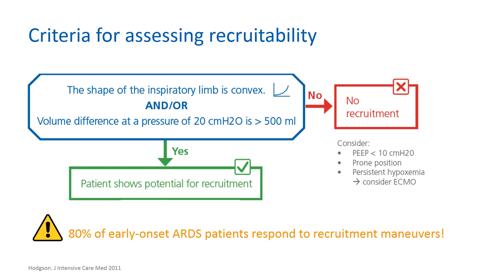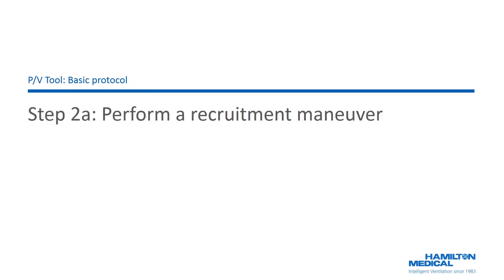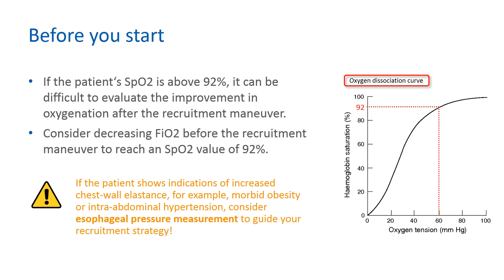After confirming the patient has high lung recruitment potential, it is time to perform an alveolar recruitment maneuver. Before you start, evaluate the patient's oxygenation status. If the patient's SpO2 is above 92%, it can be difficult to evaluate the improvement in oxygenation after the recruitment maneuver. Consider decreasing FiO2 before the recruitment maneuver to reach an SpO2 value of 92%.